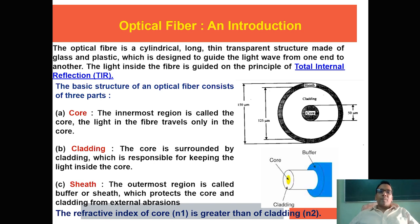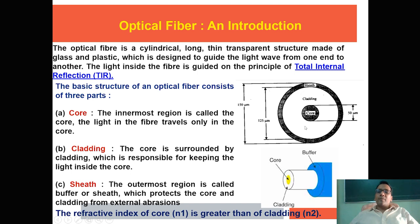Optical fiber is a cylindrical, long, thin, transparent structure made of glass or plastic, designed to guide light waves from one end to another. Light inside the fiber is guided by the principle of total internal reflection. The center part is the core, made of either glass or plastic, with an average diameter of around 50 micrometers. The second part is known as cladding.